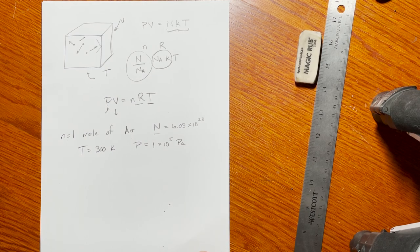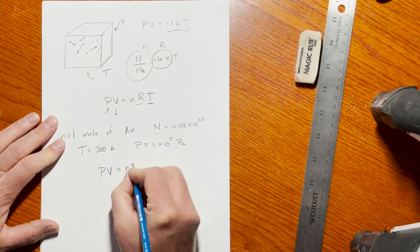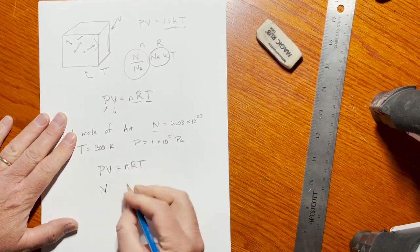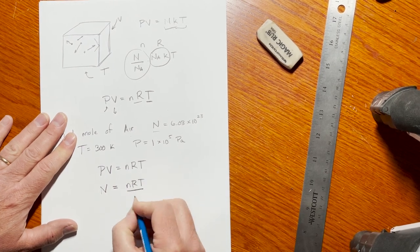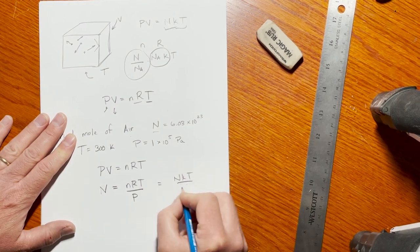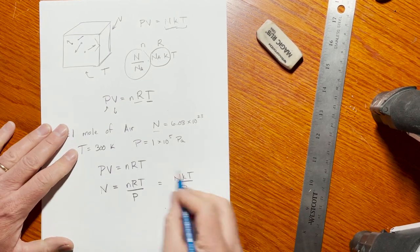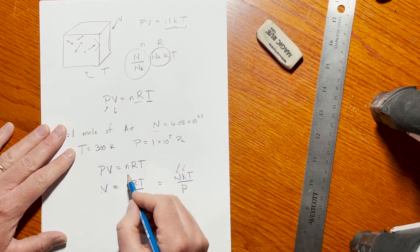We can use the ideal gas law to do that. PV equals nRT. If I solve for the volume, I get nRT over P, or I could get NkT over P—same thing, just using N and k instead of n and R. If I do that, I get something like one mole times the gas constant, which is 8.3, times 300.